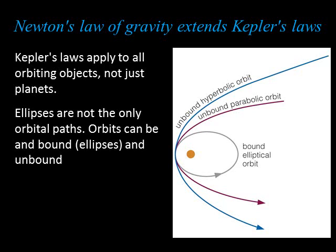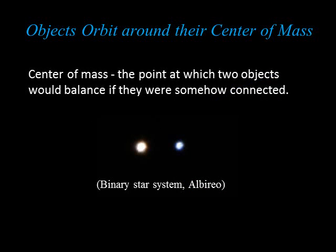Ellipses, which include circles, are the only possible shapes for bound orbits. But objects can also follow unbound orbits. These are paths that bring an object close to another object just once. Some comets, for example, follow unbound orbits. They come from afar just once, loop around the sun, and then never return. We usually think of one object orbiting another object, like a planet orbiting the sun. But Newton showed two objects attracted by gravity actually orbit around their common center of mass, or the point at which the two objects would balance if they were somehow connected.